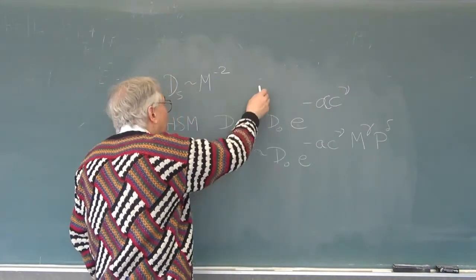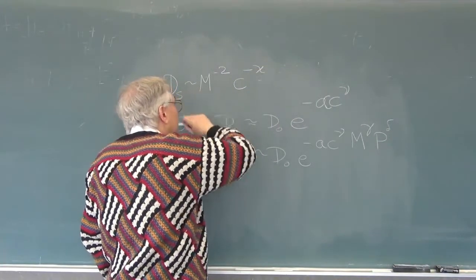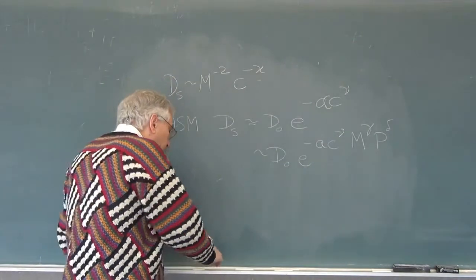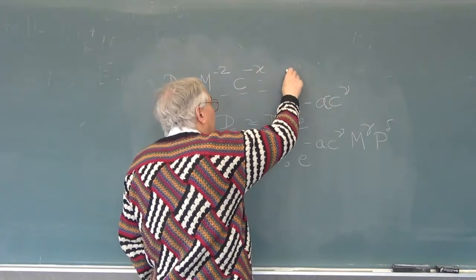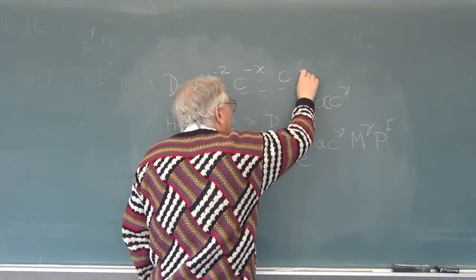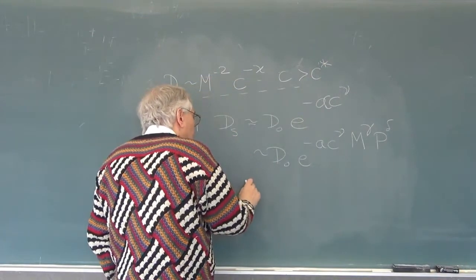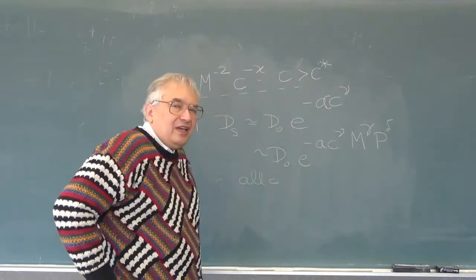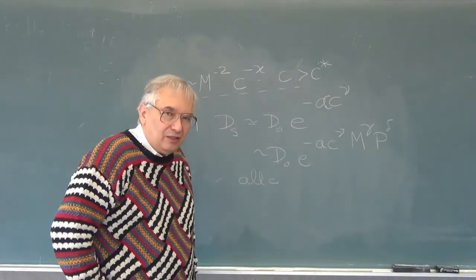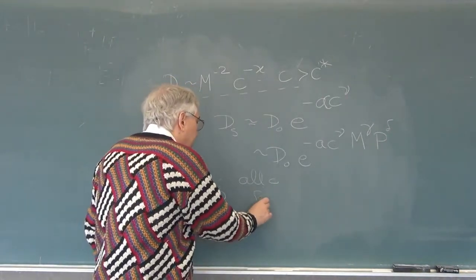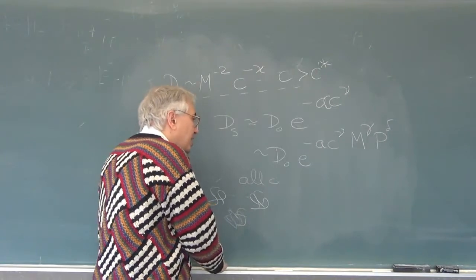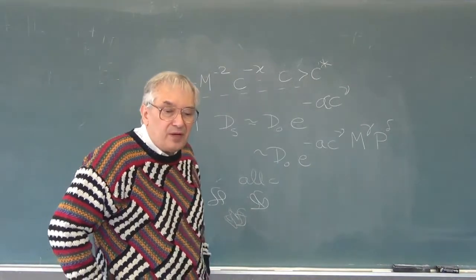There is one key difference between these two pictures. The reptation picture only works if the polymer chains are entangled, so it applies for C greater than C-star. The hydrodynamic scaling model works for all concentrations, subject to the caveat that if you push concentration high enough, there's little solvent left and hydrodynamic interactions are no longer passed by solvent but by a fluid composed of other chains.